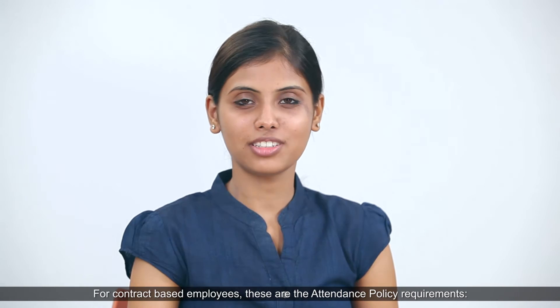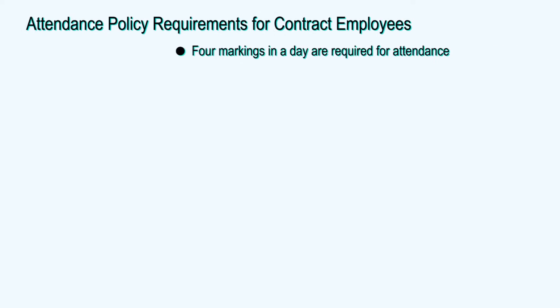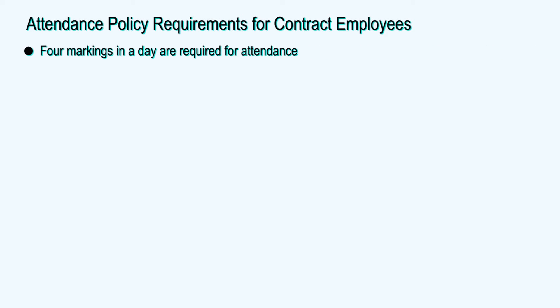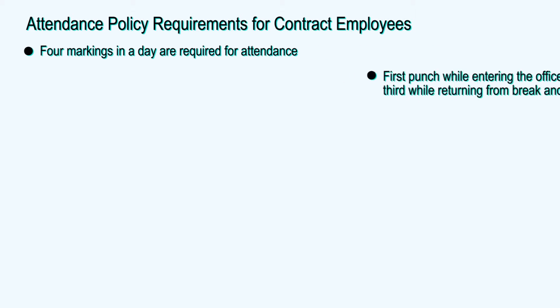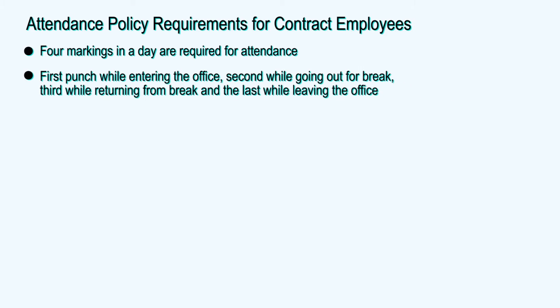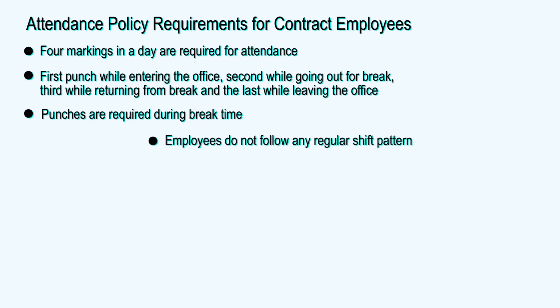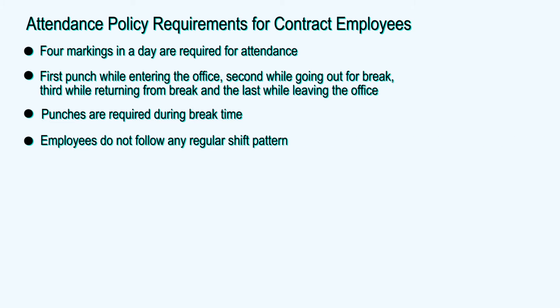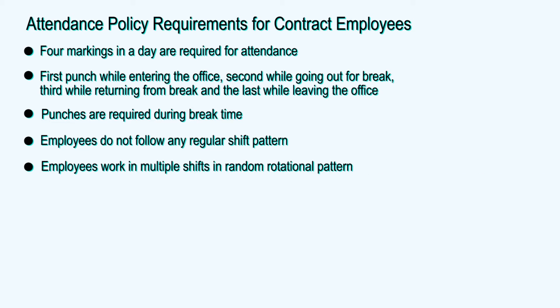For contract-based employees, four markings in a day are required for attendance: first punch while entering the office, second while going out for break, third while returning from break, and the last while leaving the office. This means punches are required during break time.